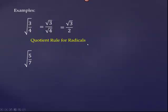Let's look at the square root of five-sevenths. Again, we're going to use the quotient rule of radicals to rewrite this as the square root of five divided by the square root of seven. Unlike the first example, we cannot simplify either one of these — five and seven are both prime, not perfect squares. Our goal here, if we look at criteria number four, we're not supposed to have a radical in the denominator. A radical in the numerator is okay, but we cannot write this with an irrational number in the denominator. The square root of seven is an irrational number.